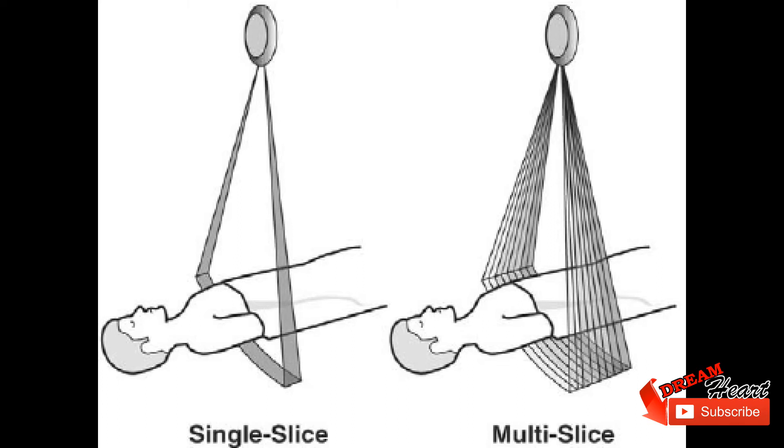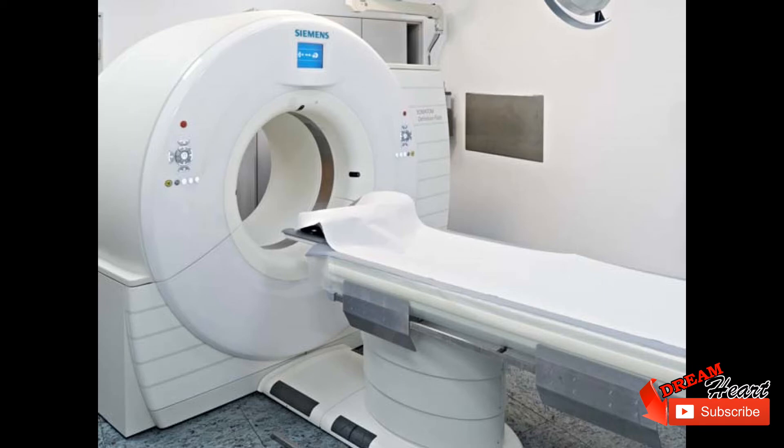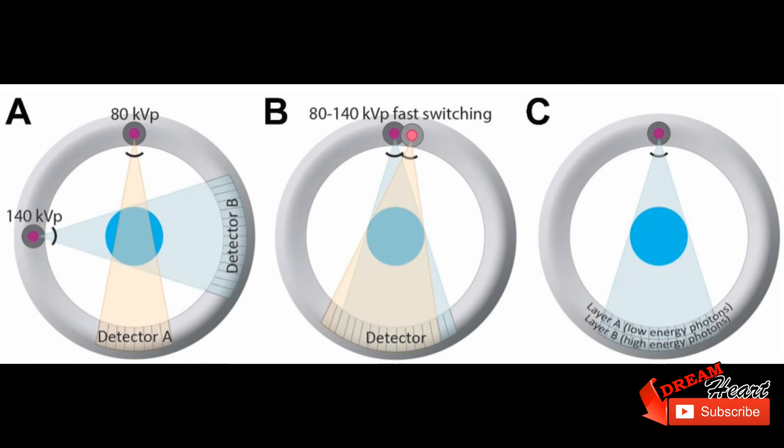Current models from 2007 have up to three rotations per second and isotropic resolution of 0.35 millimeter voxels with z-axis scan speed of up to 18 centimeters per second. This resolution exceeds that of high resolution CT techniques with single slice scanners, yet it is practical to scan adjacent or overlapping slices. However, image noise and radiation exposure significantly limit the use of such resolutions.